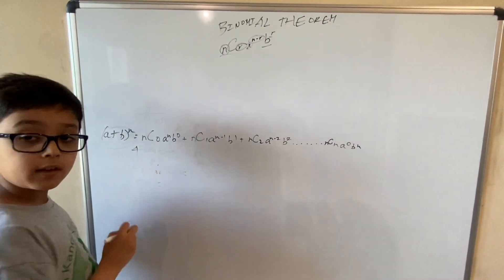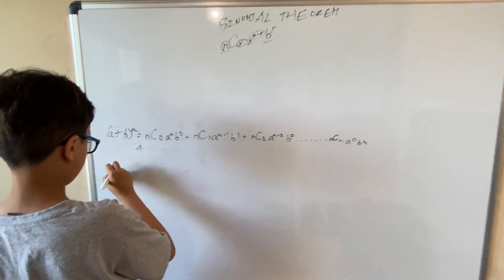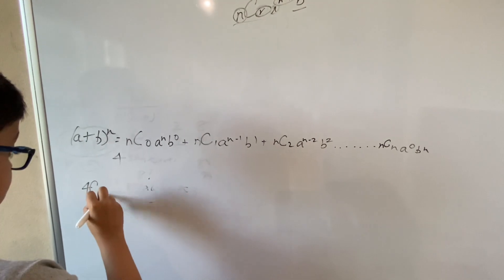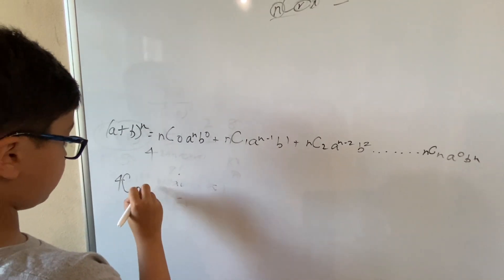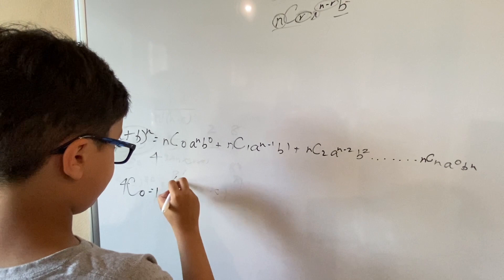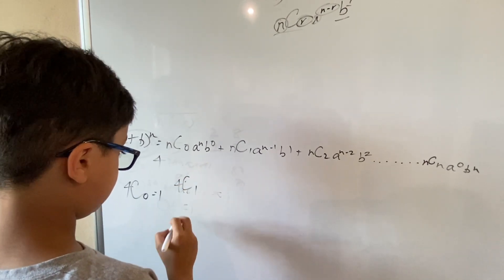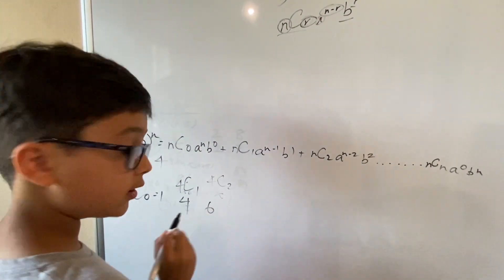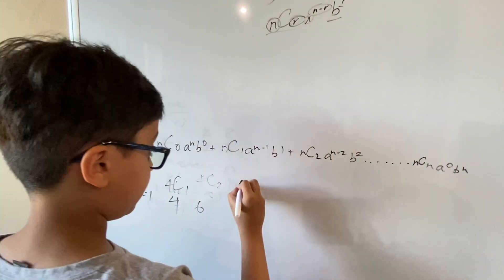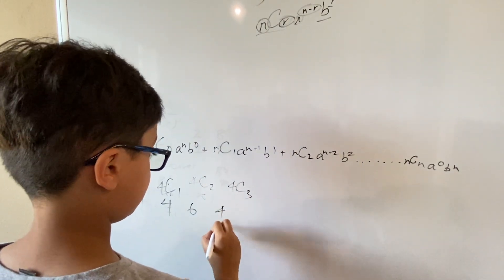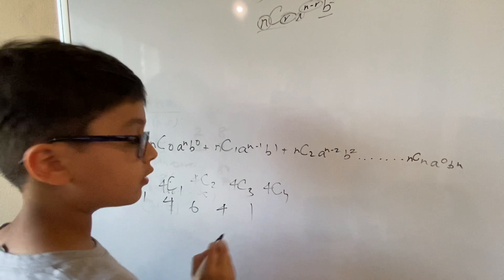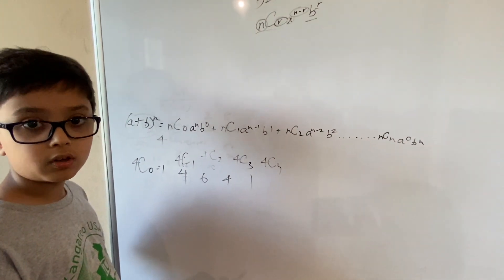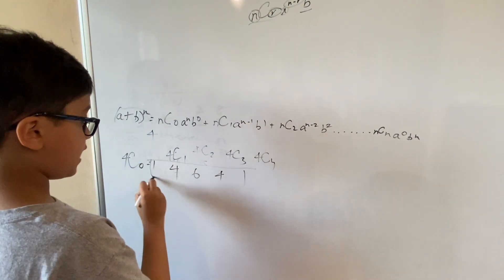Let's suppose n equals 4. I'm only talking about the coefficients. The first one will be 4C0, which equals 1. Then 4C1, which equals 4. Then 4C2, which equals 6. Then 4C3, which equals 4. And then 4C4, which equals 1. You can try this out on your own, and you can use it for any number.